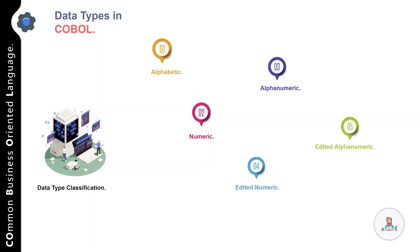There are two more additional categories of data type, which is edited numeric and edited alphanumeric. These two categories are actually an extension of numeric and alphanumeric. Edited numeric is made up of digits and special characters. Apart from that, edited alphanumeric is made up of letters, digits, and special characters.